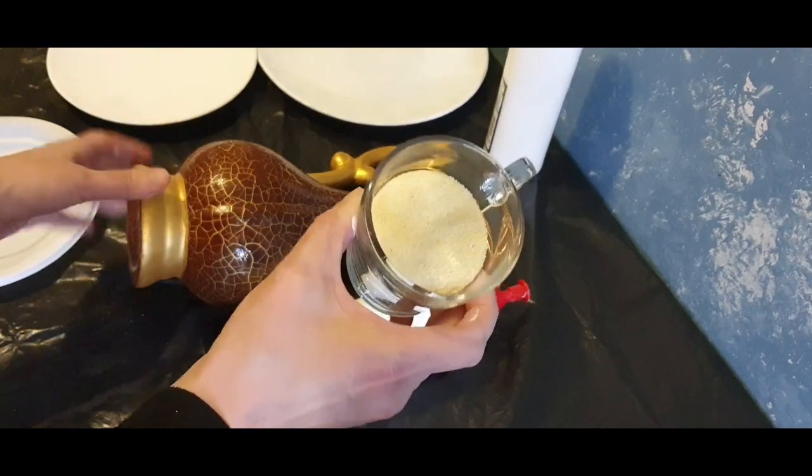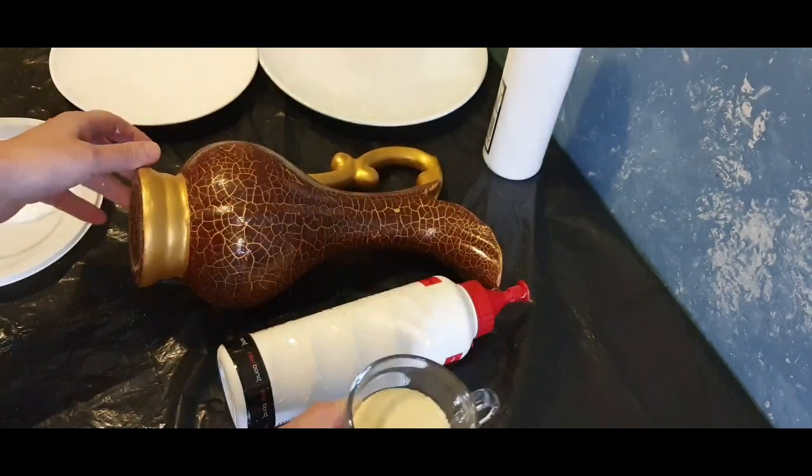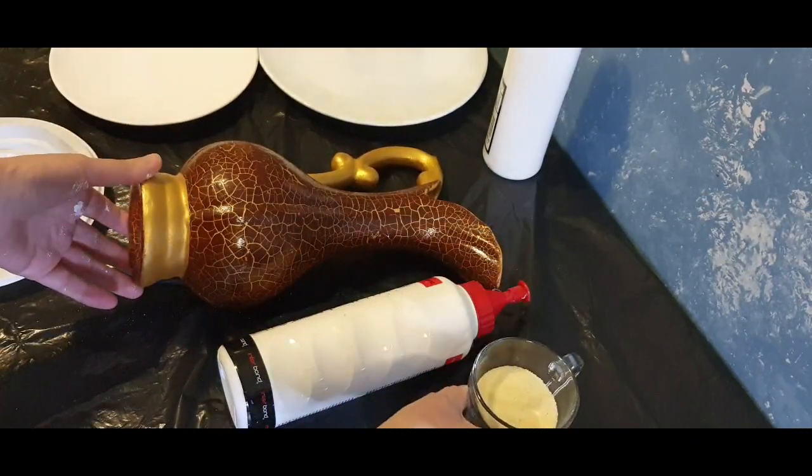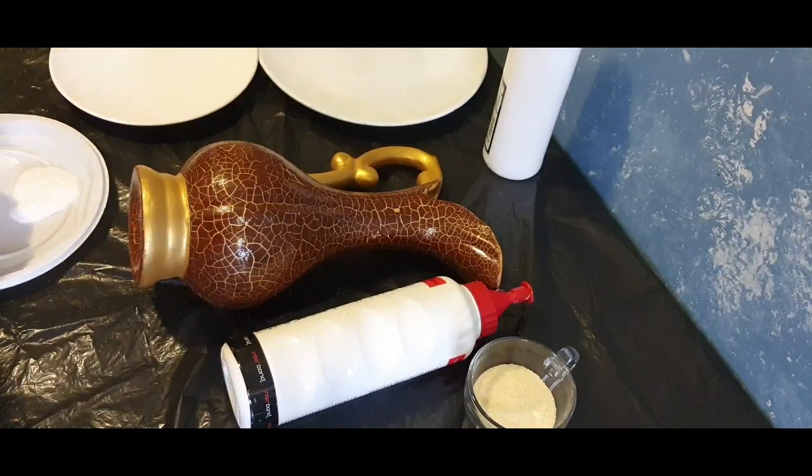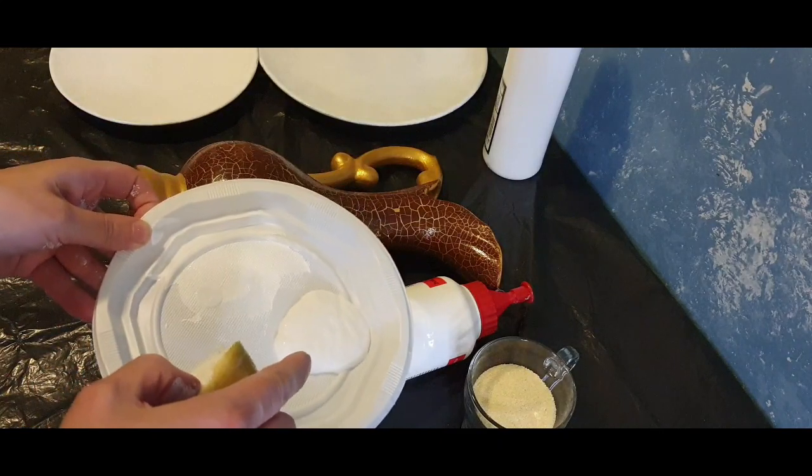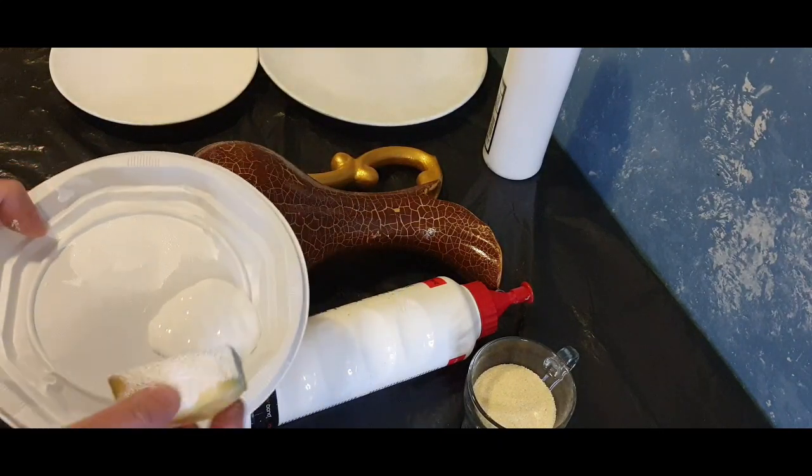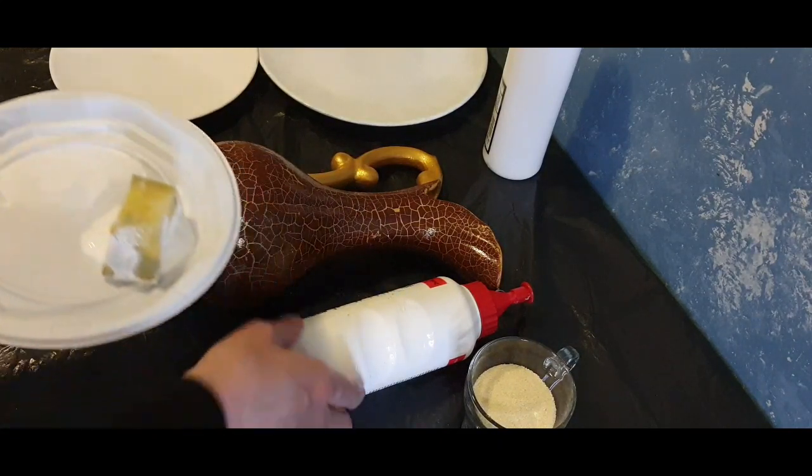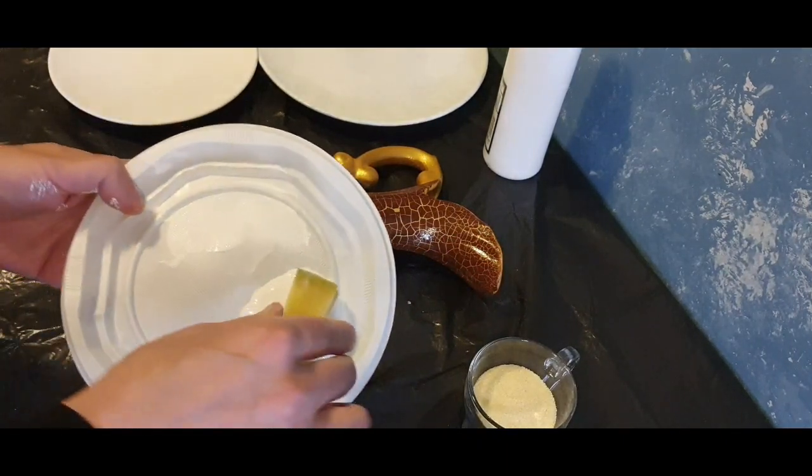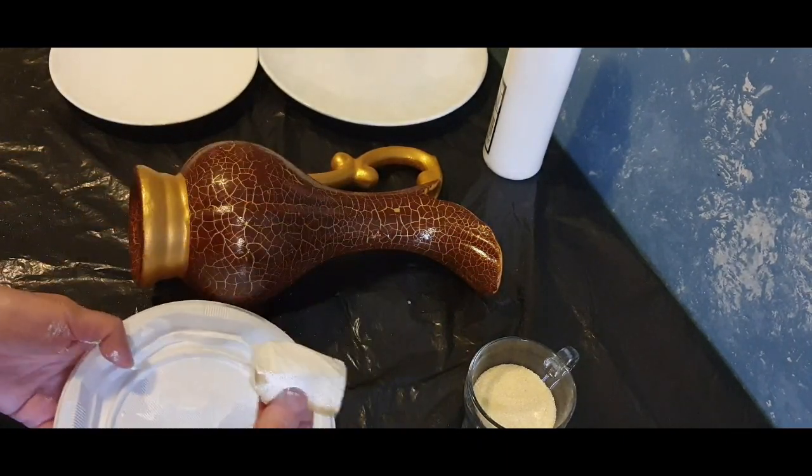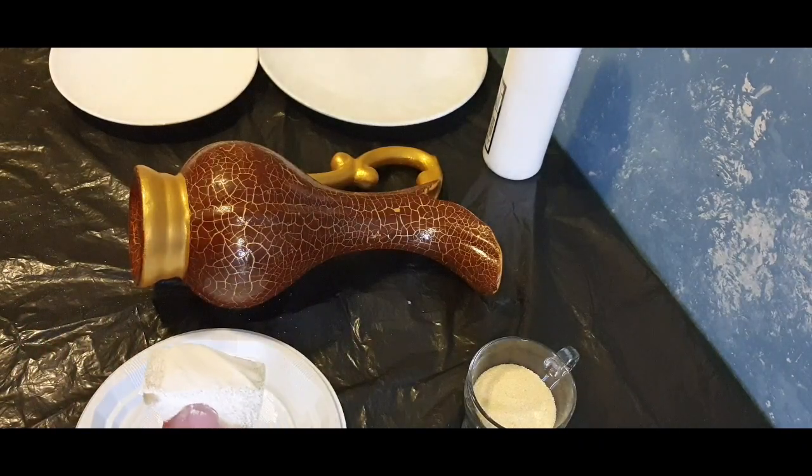Malzemelerimiz irmik, tutkal ilk etap için söylüyorum. Size olabildiğince ayrıntılarını anlatacağım ki, kendiniz uyguladığınız zaman benimle aynı dokuyu yakalayabilesiniz. Öncelikle yüzeyi tutkallıyorum. Testiyi tamamen tutkalladıktan sonra üzerine irmik serpeceğim. Bu şekilde bir işlem yapıyorum.